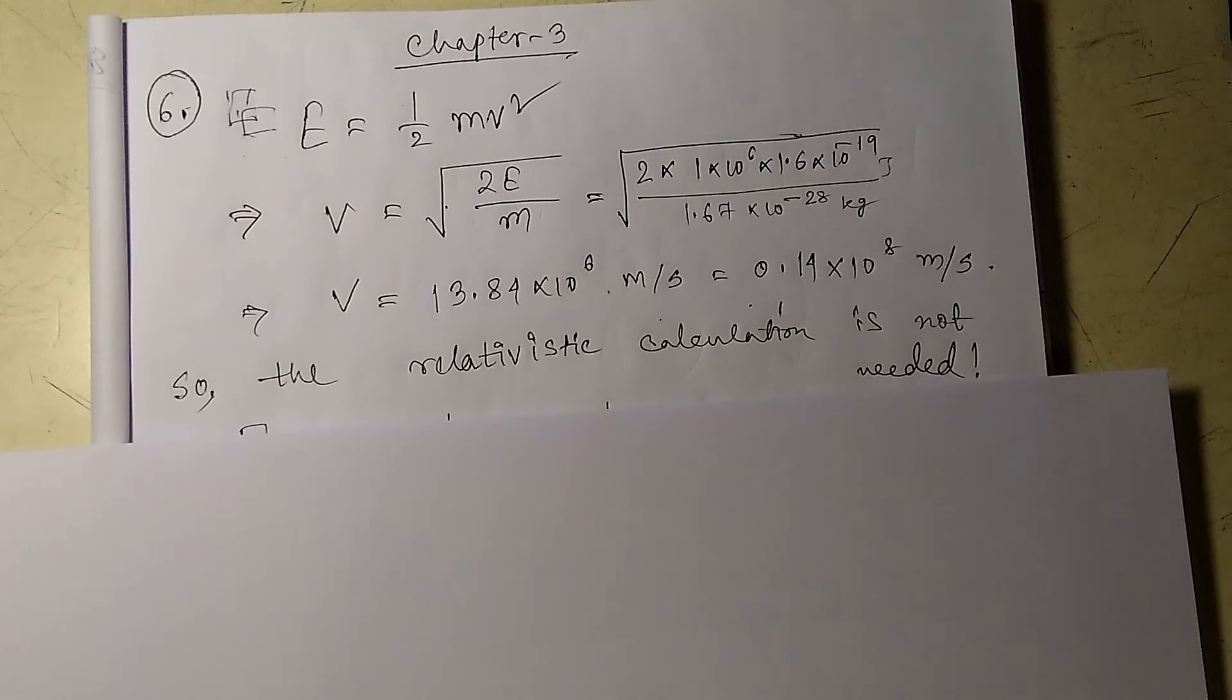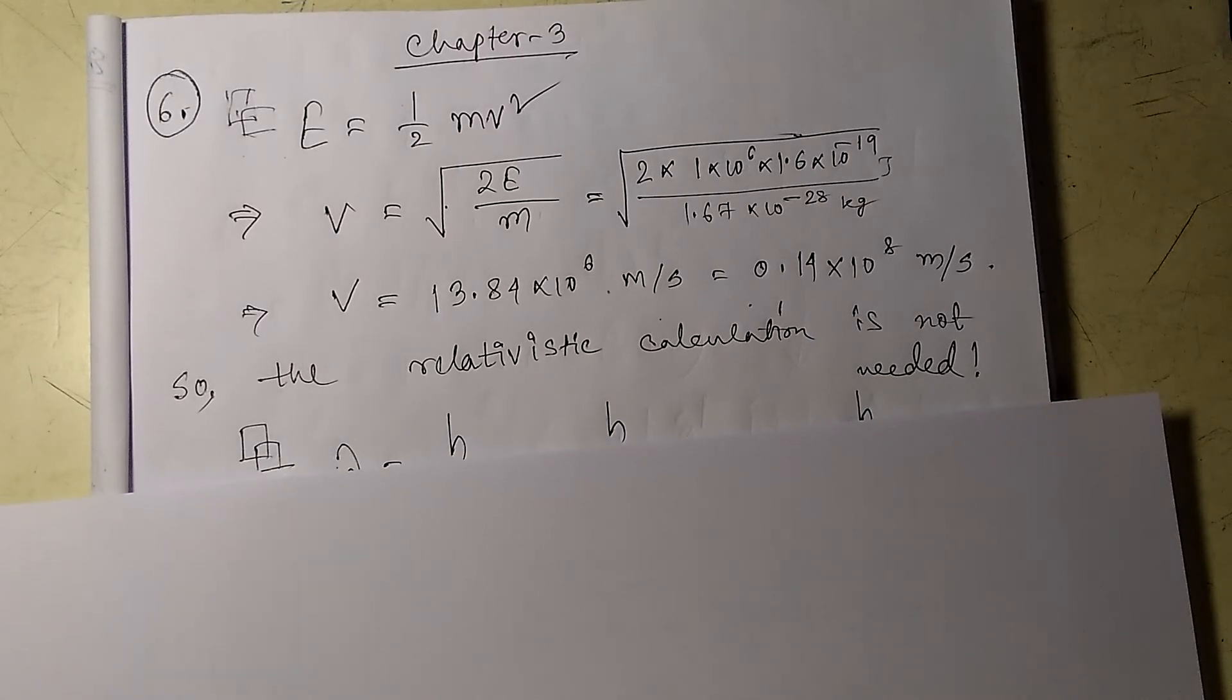And for this, I know de Broglie's formula: lambda equals h upon p, where lambda is the wavelength, h is Planck's constant, and p is the momentum of the particle.